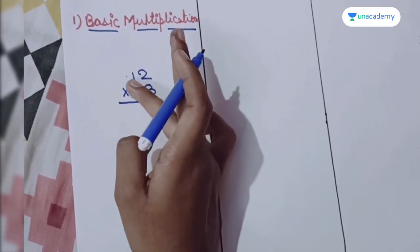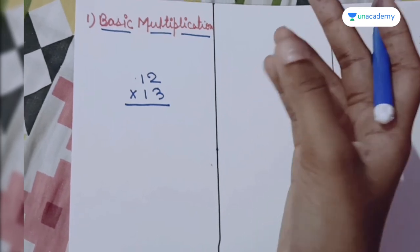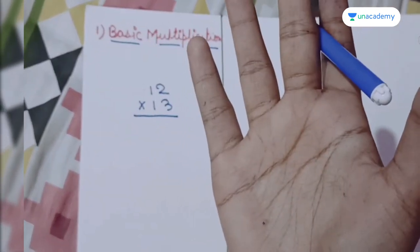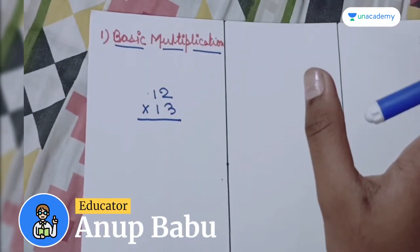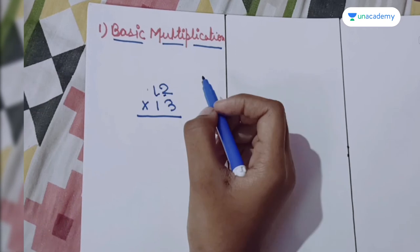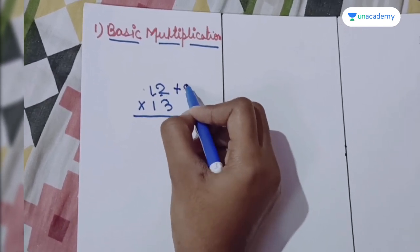But in Vedic Mathematics I will be using the Sutra to multiply this in a different way. So here we have two numbers: 10 plus 2 is 12, so we are going to take 2.